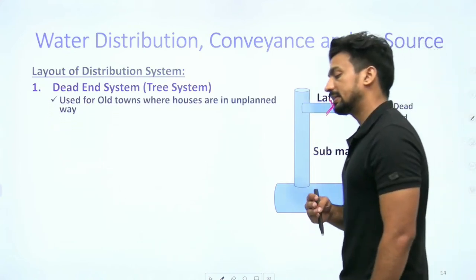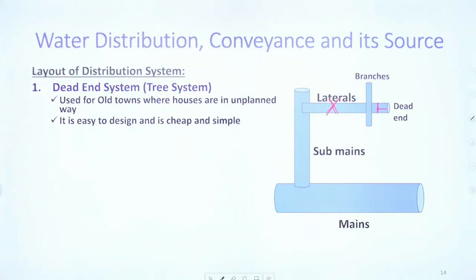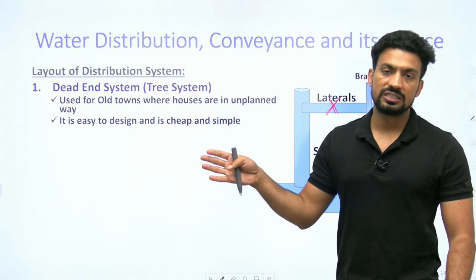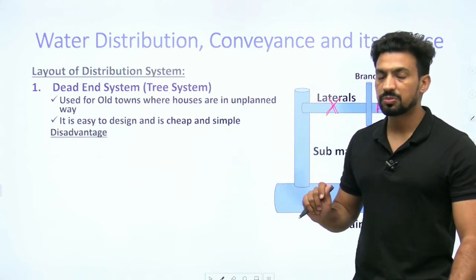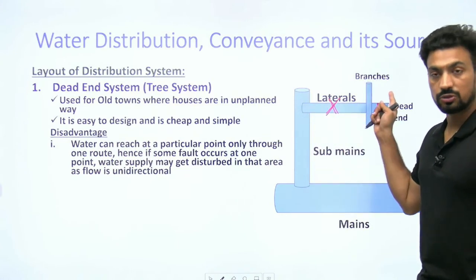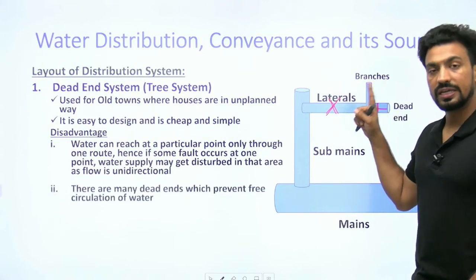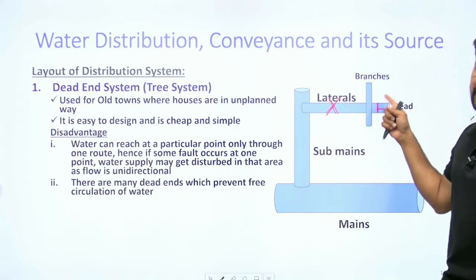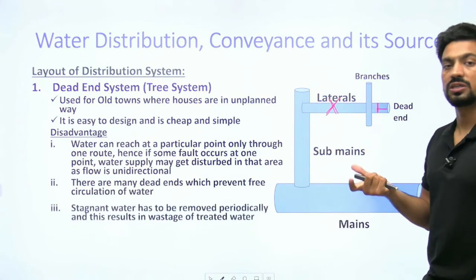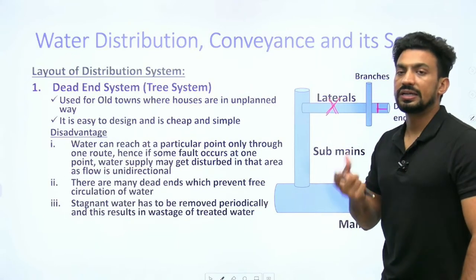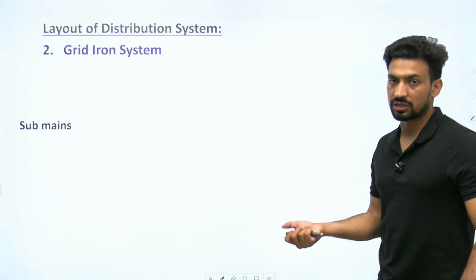Dead end system old towns के लिए है जहां पहले से unplanned तरीके से घर बस चुके हैं। यह easy to design, cheap और simple है। लेकिन disadvantage: water can reach at a particular point only through one route। अगर उस route में कहीं भी दिक्कत आई तो आगे पानी नहीं पहुंचेगा। Unidirectional flow रहेगा। कुछ जगहों पर stagnant water रहेगा जो unhealthy है। Stagnant water को periodically remove करना पड़ता है और इससे treated water की wastage होती है।